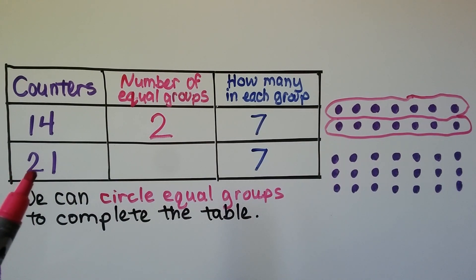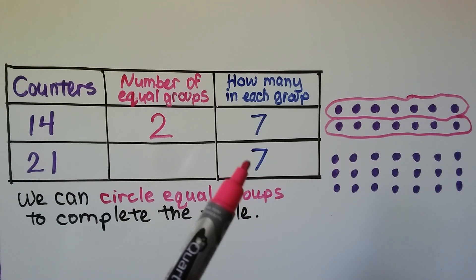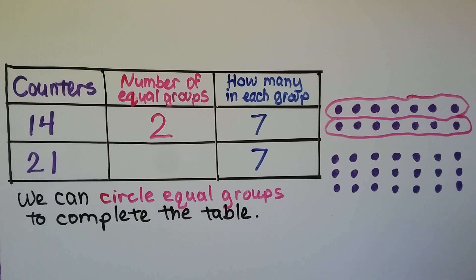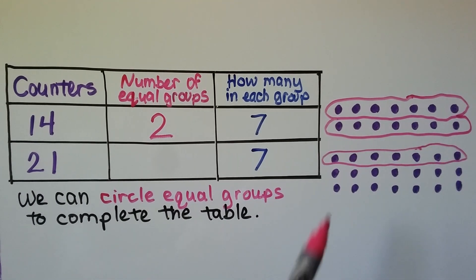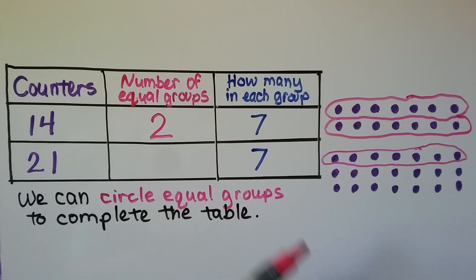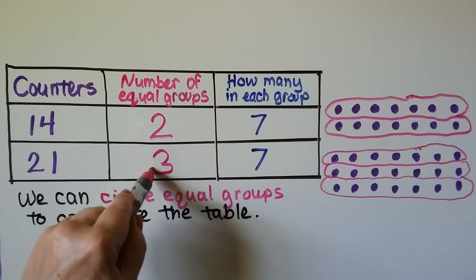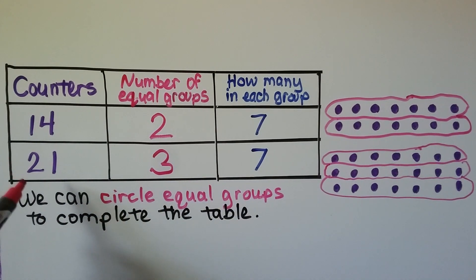Now we have twenty-one counters. We circle seven for the first group, seven for the second group, and seven again for the third. We made three equal groups with seven in each group from twenty-one counters. We circled the equal groups and completed the table.